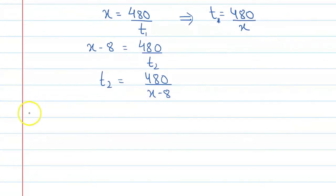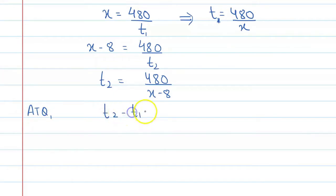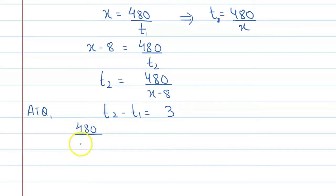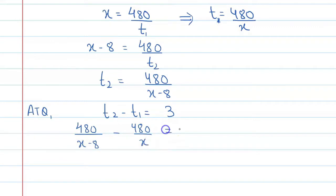According to the question, t2 minus t1 is equal to 3. So we write: 480 upon (x minus 8) minus 480 upon x equals 3.